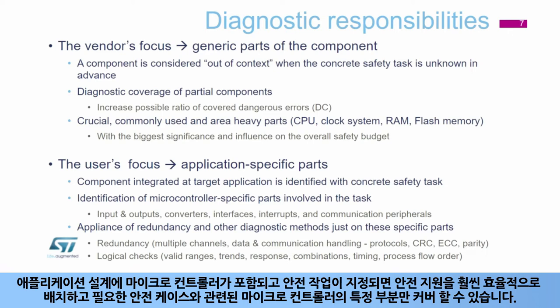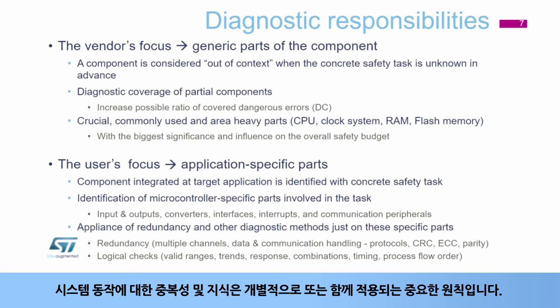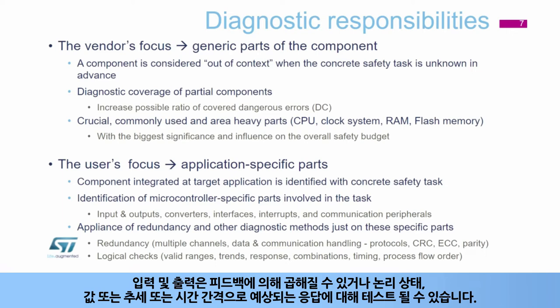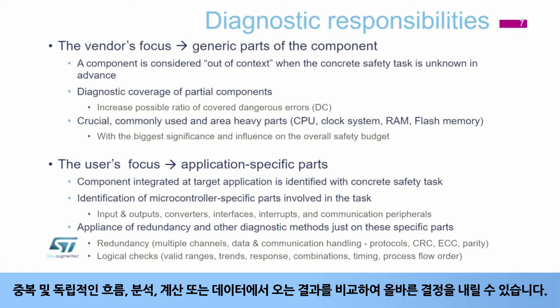Once a microcontroller is included in an application design and the safety task is specified, the safety support can be deployed much more efficiently and cover just the very specific parts of the microcontroller involved in the required safety case. Many efficient methods can then be applied based on detailed knowledge of the application requirements, its design, the process, and the equipment under control. Redundancy and knowledge of the system behavior are crucial principles applied either separately or together. Inputs and outputs can be multiplied or checked by feedback, tested for logical state, value, or expected response in trends or time intervals. The processes can be monitored for correct timing and flow order. Correct decisions can be made on the comparison of results coming from redundant and independent flows, analysis, calculations, or data.